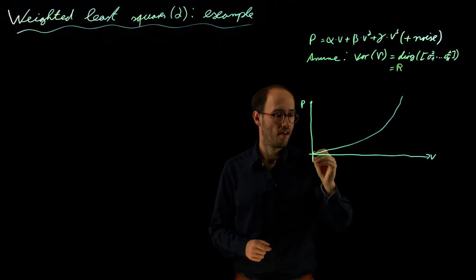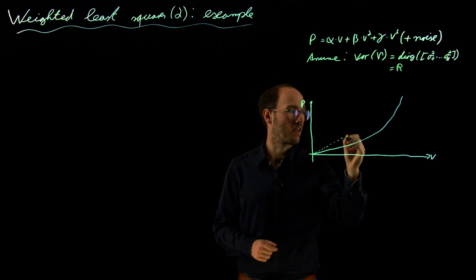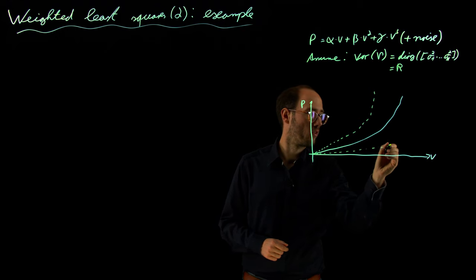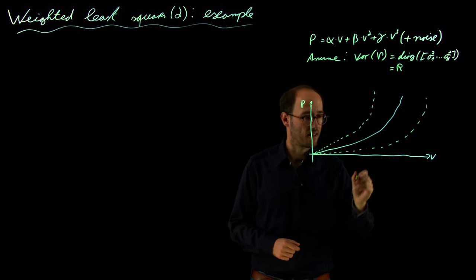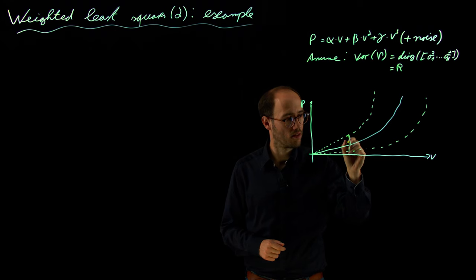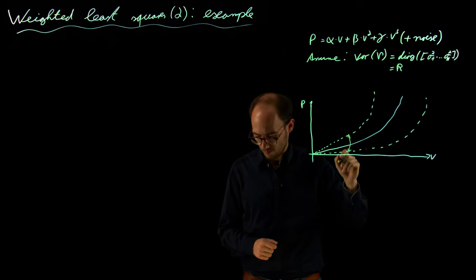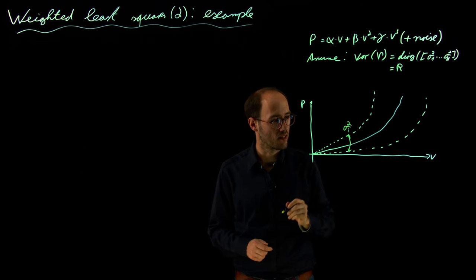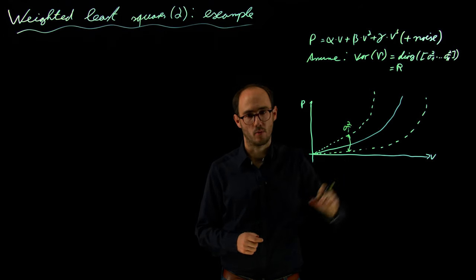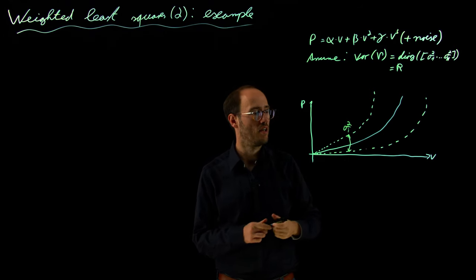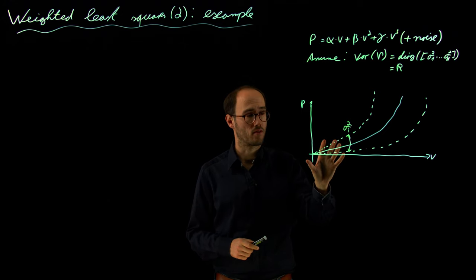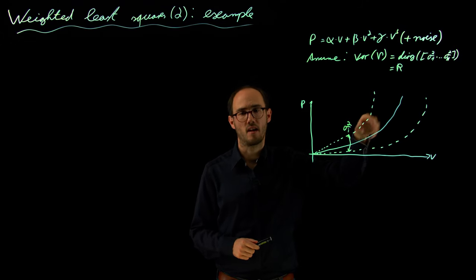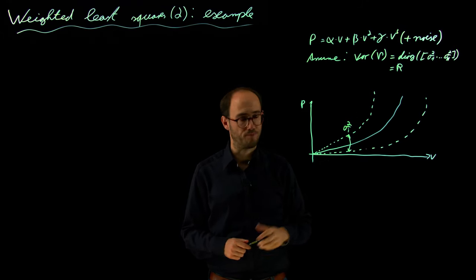which we have introduced previously. And to make this a little bit more specific, what I assume here is that our variance is basically increasing with the speed so that for a certain measurement of the power over the speed, this will basically increase with the speed. So our sensor is very accurate at low speeds in terms of measuring the power of the car and it becomes noisy and more uncertain at higher speeds.